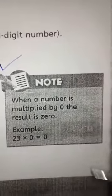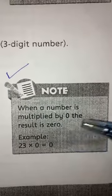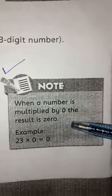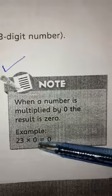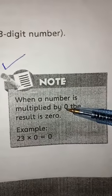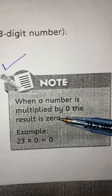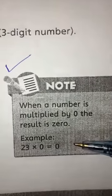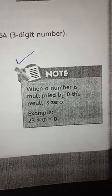Another note here says when a number is multiplied by 0 the result is 0. Example, 23 multiply 0 is 0. You can multiply any number by 0, the answer is always 0. For example, 5 zeros are 0, 3 zeros are 0, 9 zeros are 0.